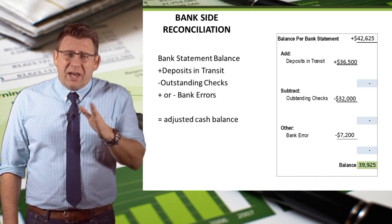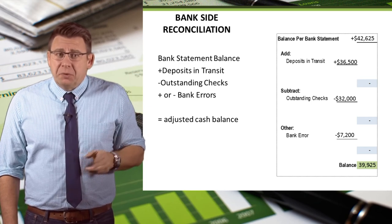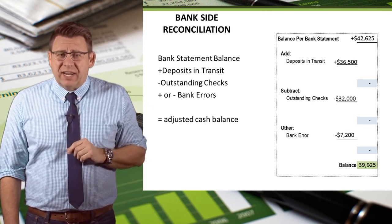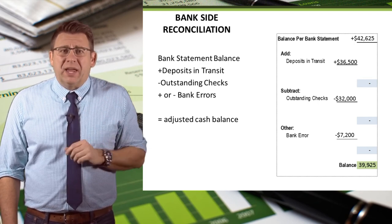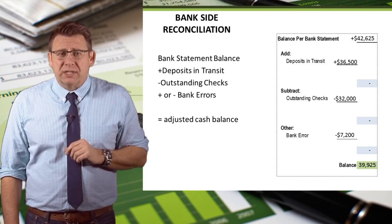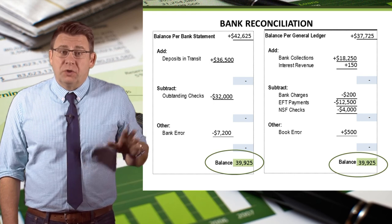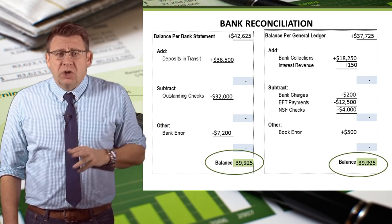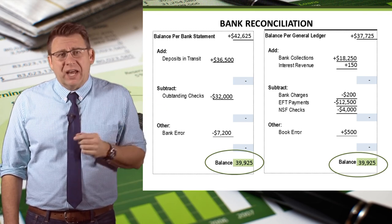To recap how to reconcile the bank side: we take the bank statement balance plus the deposits in transit, minus the outstanding checks, plus or minus any bank errors, to arrive at the adjusted cash balance. When we compare the bank side adjusted cash balance to the book side adjusted cash balance, they should be the same. To learn how we arrived at the adjusted cash balance for the book side, I would encourage you to watch that video example.